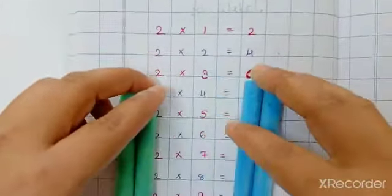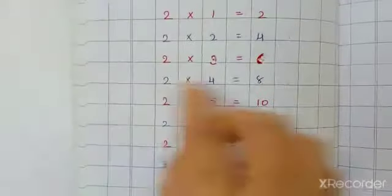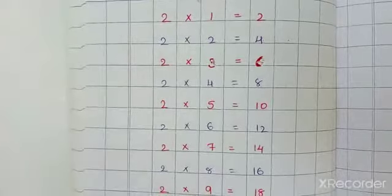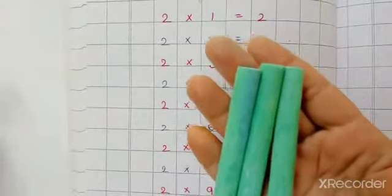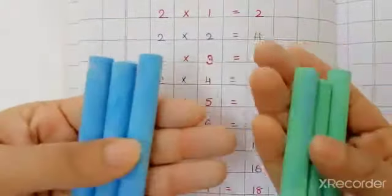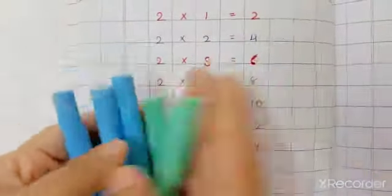Next is two threes are six. So two groups of three chalks. One group of three chalks and two groups of three chalks. So total six. So it's two threes are six.